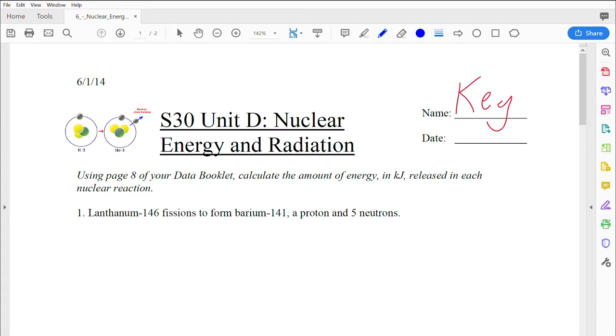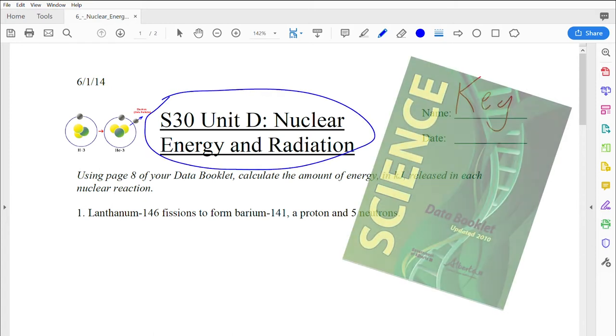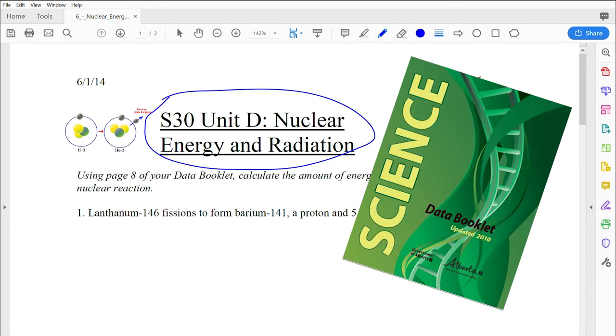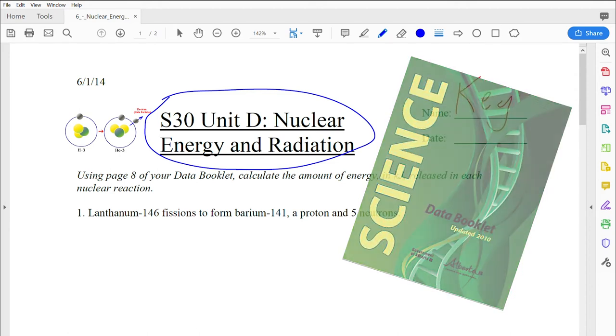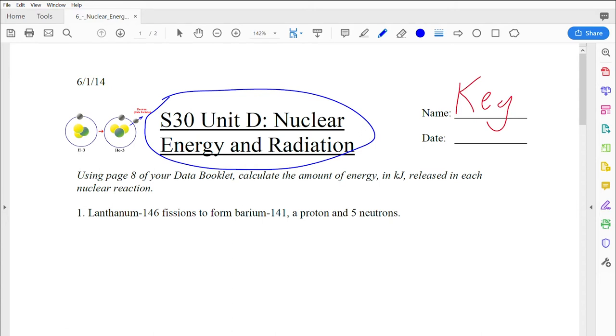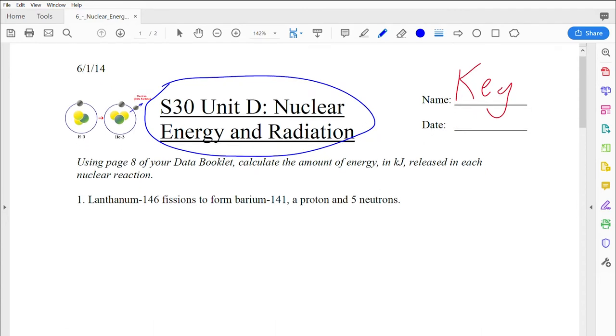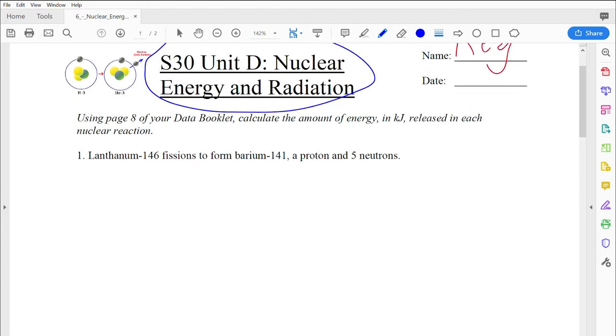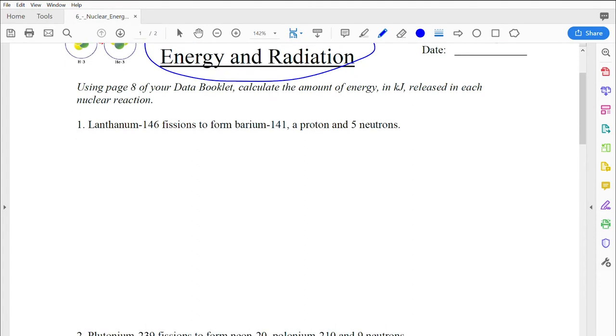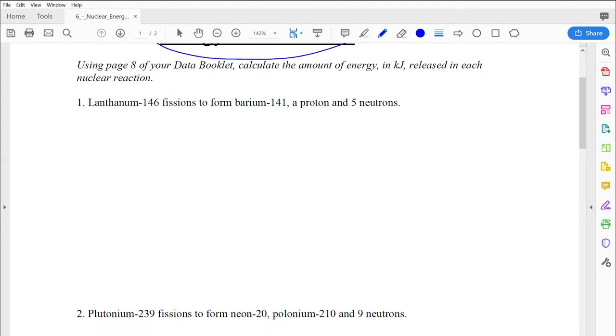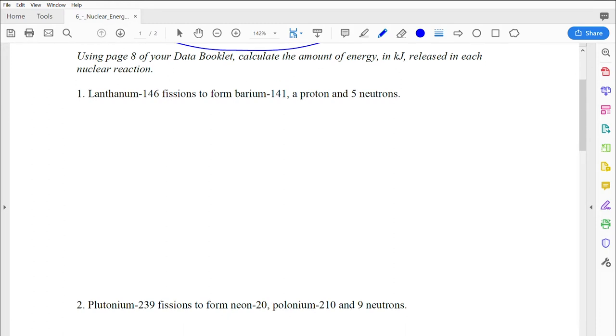Hi Science 30s! We're going to take a look at this nuclear energy and radiation handout, where we're doing some calculations to figure out how much energy is released in a nuclear reaction. To do this, you're going to need three things: this handout from my website lbindustries.ca, a data booklet specifically page 8, and a calculator.